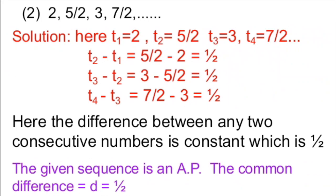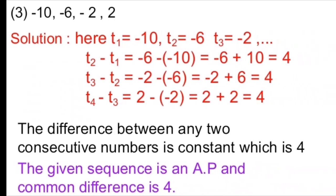The difference between the second and first term, T2 minus T1, is 5/2 minus 2, which is 1/2. The difference between the third and second term, 3 minus 5/2, is also 1/2. The difference between the fourth and third term, 7/2 minus 3, is also 1/2. The difference between any two consecutive terms is constant at 1/2, satisfying the AP condition. So the given sequence is an AP with common difference D equal to 1/2.